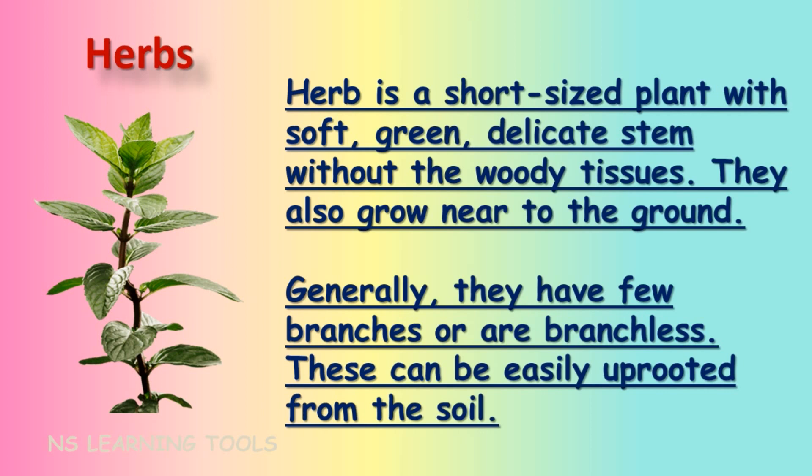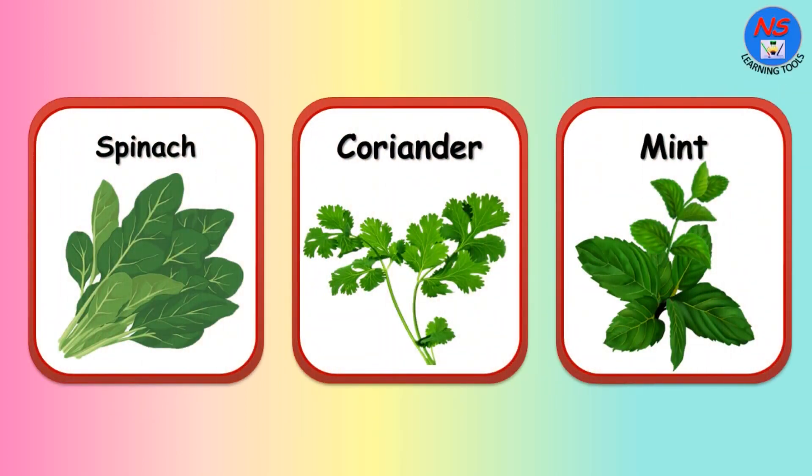Herbs are short-sized plants with soft, green, delicate stems without woody tissue. They also grow near to the ground. Generally they have few branches or are branchless. These can be easily uprooted from the soil. Spinach, coriander, and mint are examples of herbs.